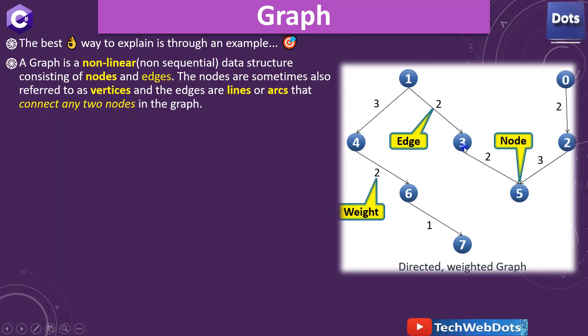And these are the edges. Between 1 to 3 this is my edge, and the number written over there on the edge or you can say arc or line, that is called weight. So now let's read the definition once again. A graph is a non-linear, non-sequential data structure.